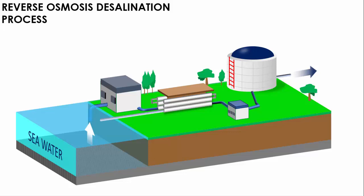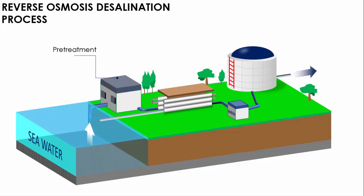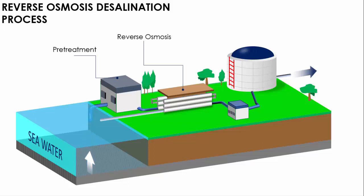The extracted sea water is then transferred for pretreatment. From the pretreatment, the water goes to the reverse osmosis process where pressure is applied, and the salt from the sea water will be separated and removed.